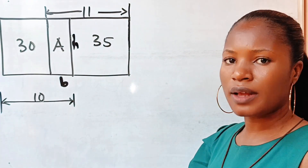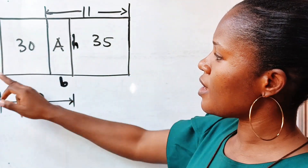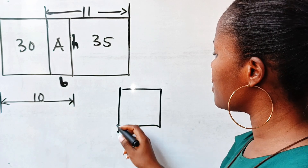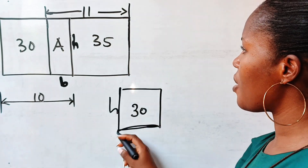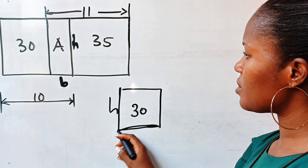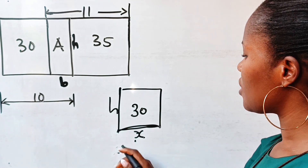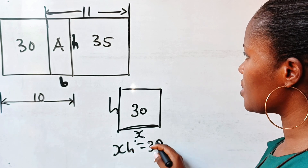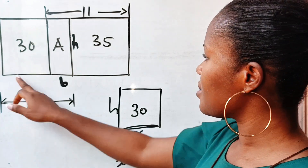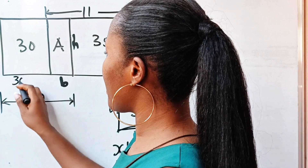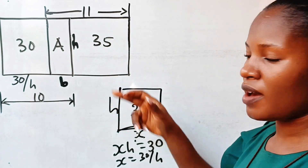Note that if the area of this place is 30 and the height is h, and we call this length x, then x times h is equal to 30. That means x is 30 over h. So I can write this place as 30 divided by h. Similarly, this place will be 35 divided by h.